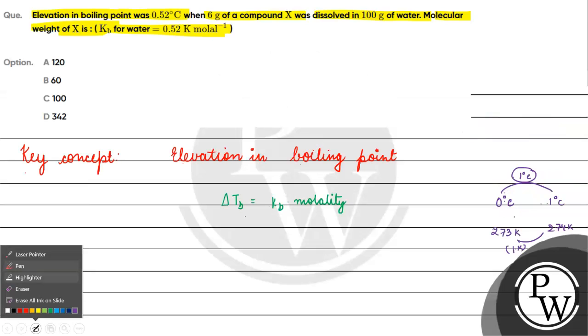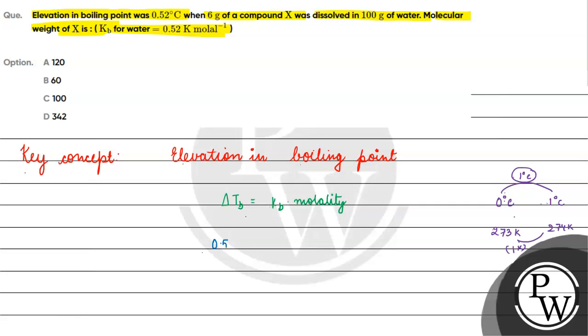If we see in this question, the difference given is 0.52 degree Celsius. We can also write delta Tb as 0.52 Kelvin. This equals Kb, which is 0.52 Kelvin per molal. This is M, molality, which is what we need to find.